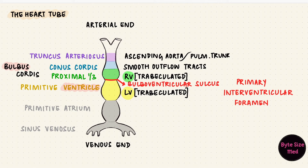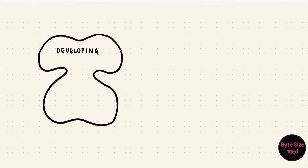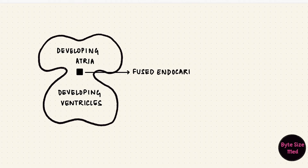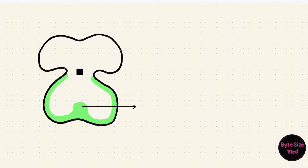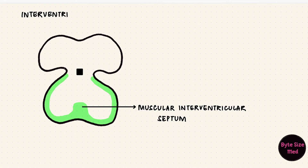The two ventricles now have to separate. From the apex of the ventricular cavity, there's a muscular growth — this is the muscular part of the interventricular septum. It's partly from the fact that the ventricular chambers are enlarging as they grow. But even with that part of the septum, there's a space still left behind between the two chambers. That's the interventricular foramen and it has to close.